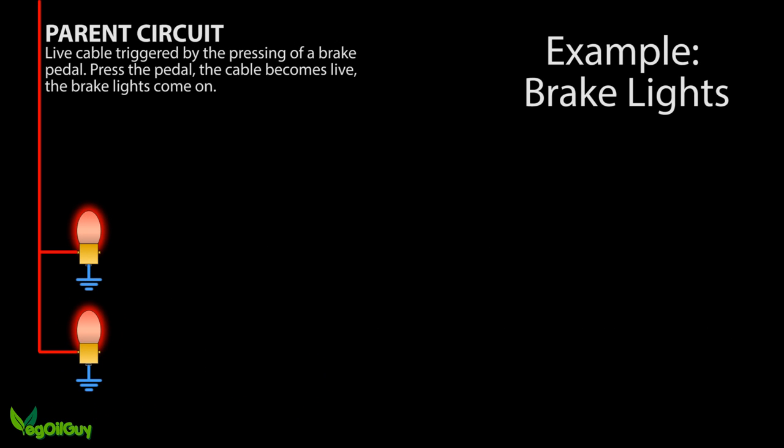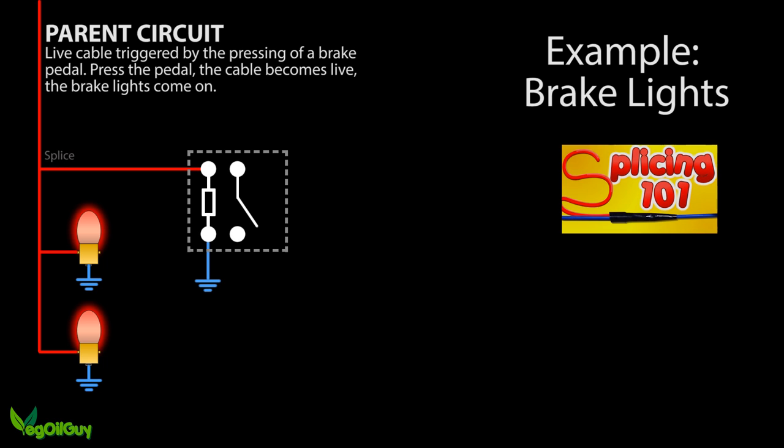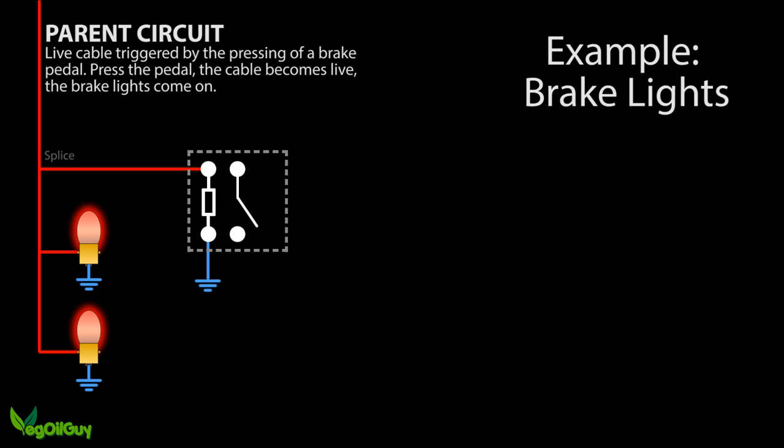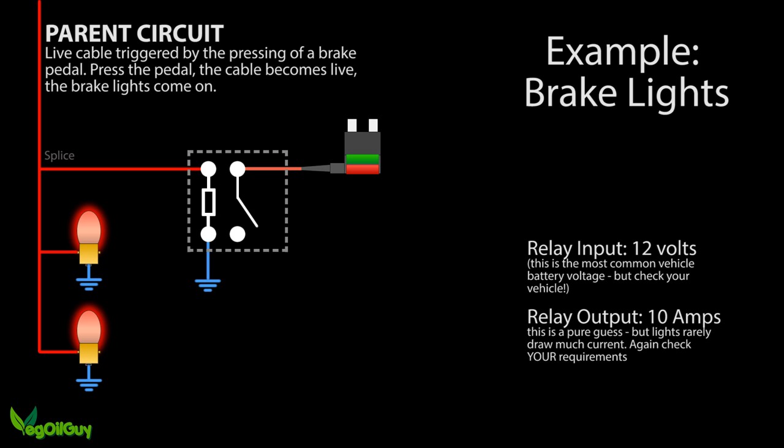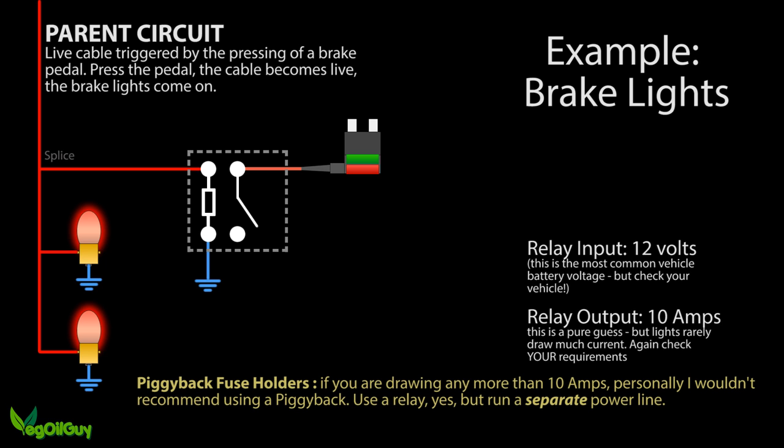Sticking with the example of brake lights for a moment, if we splice into the original, or the parent circuit as we call it, we can use this live spliced cable to energise our relay. The relay uses so little current that there's virtually no danger of overpowering the original circuit. So everything's safe that way, no fuses are going to blow. The piggyback supply can then be fed through the output terminals of the relay and that can be used to power the new brake light, without any concerns of overtaxing the original circuit at all.